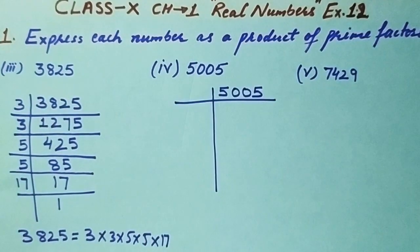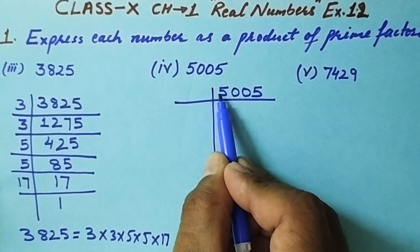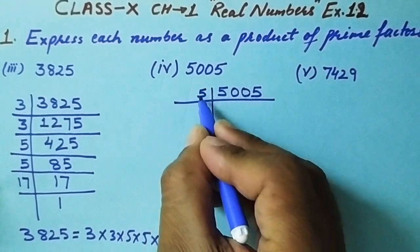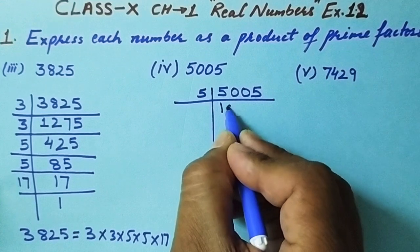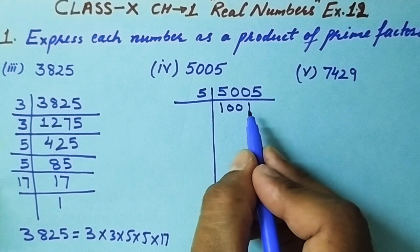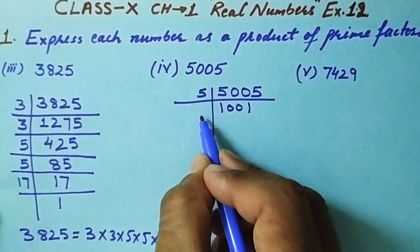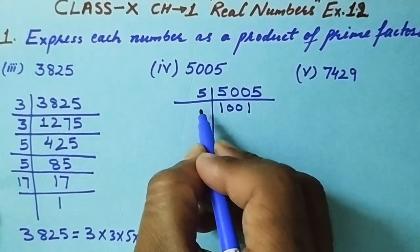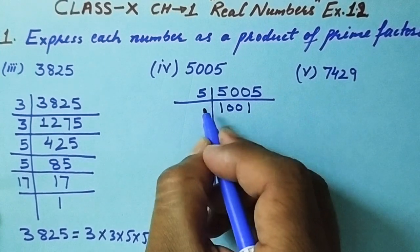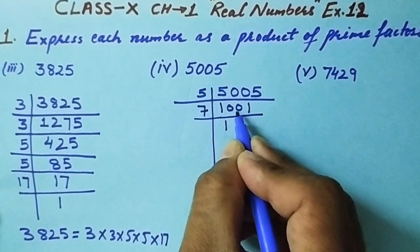Now let's do the next part: 5005. It's not divisible by 2. Digit sum: 5 + 0 + 0 + 5 = 10, not divisible by 3. Units place is 5, so it's divisible by 5: 5005 ÷ 5 = 1001. Now 1001 is not divisible by 5. Checking with 7: 1001 ÷ 7 = 143. We verify: 7 × 143 = 1001, which works.